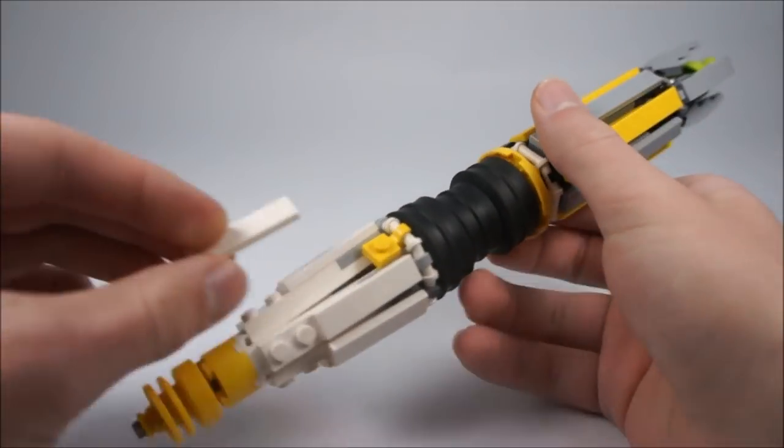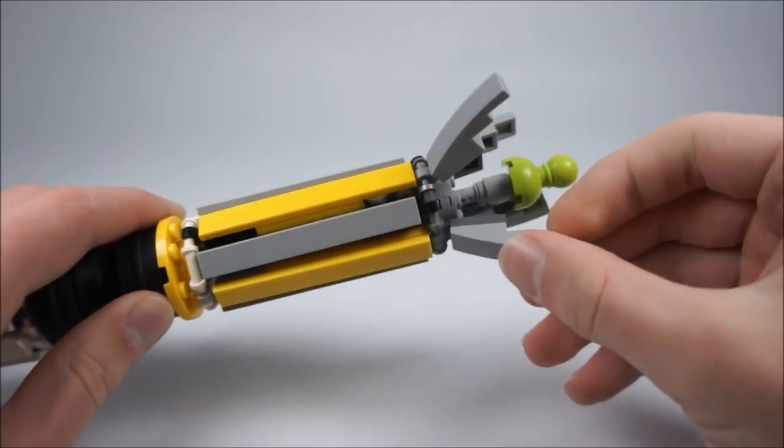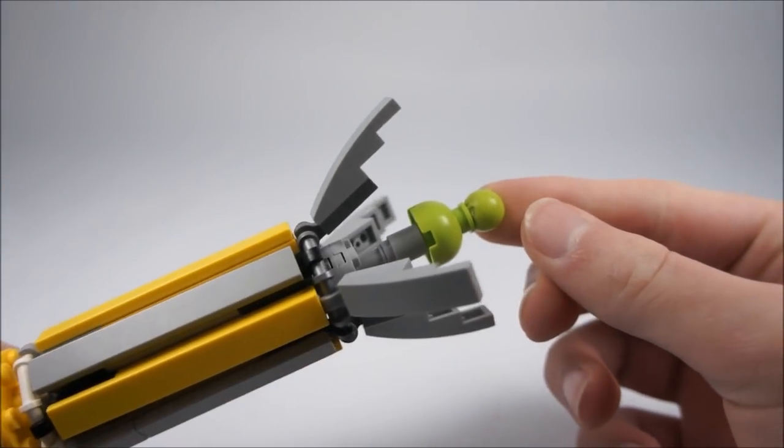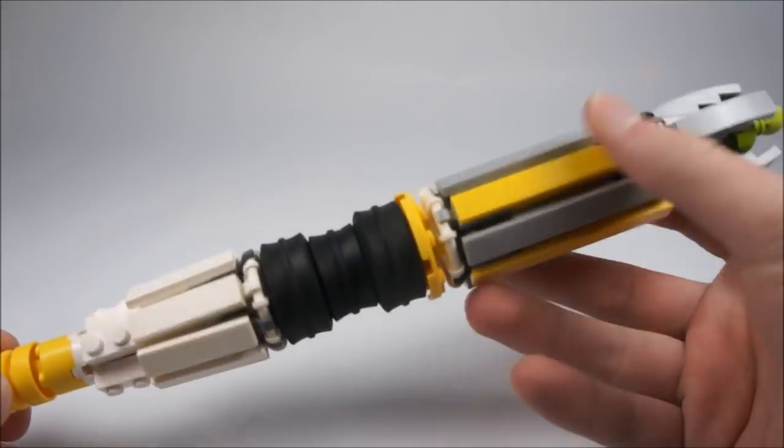And then this piece popped off, and it has the emitter, of course, if I just open these up. And these claws do extend, and you can see there how the emitter looks. It looks pretty nice, a lot like the emitter from the actual show.